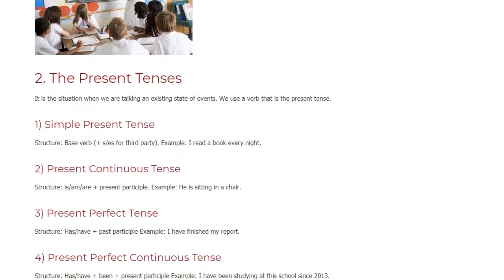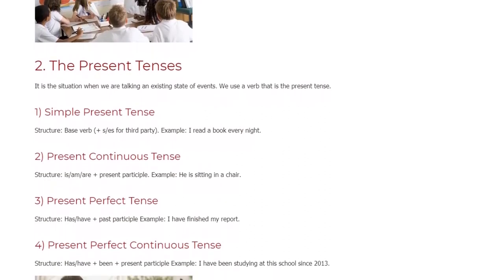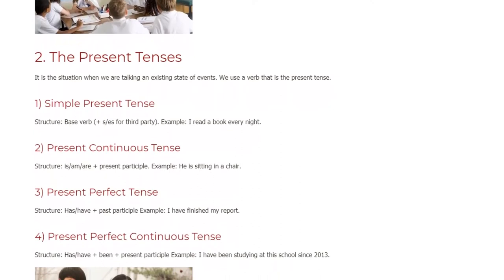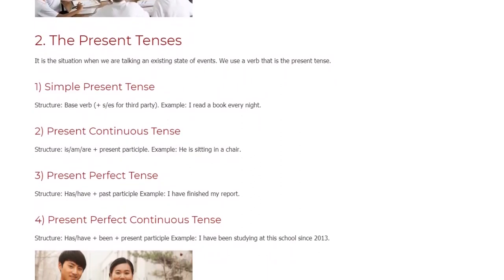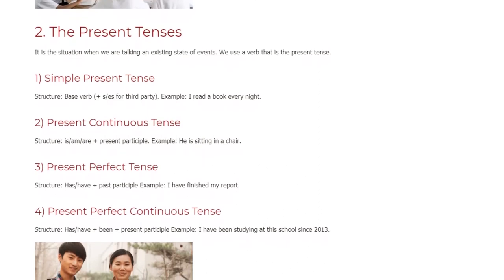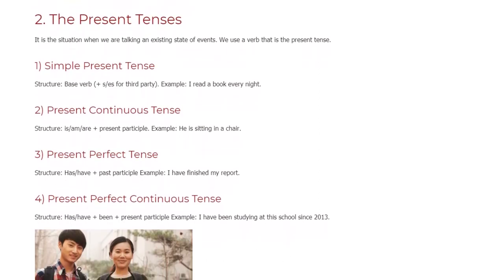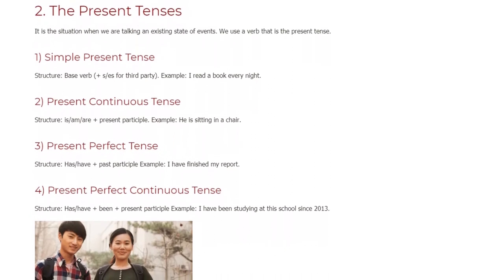3. The Future Tense. This describes an action that will take place at some future time. For example, if we want to say something that is planned to happen, or we think it is likely to happen in the future, then we use the Future Tense.